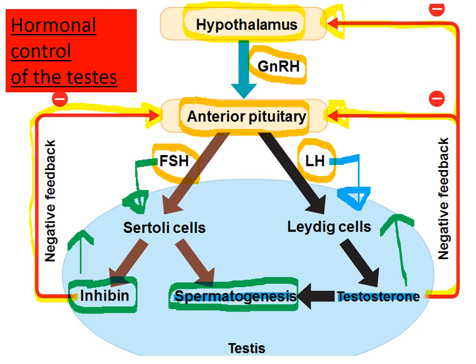That brings our first section on human reproduction to an end. We looked at the structures of the male and female reproductive system, how the male produces sperm cells in the process of spermatogenesis, and how the female produces egg cells in the process of oogenesis. Lastly, we looked at the hormonal control present in the male reproductive system. Thank you so much for watching — I hope that you learned something, and I will see you soon.